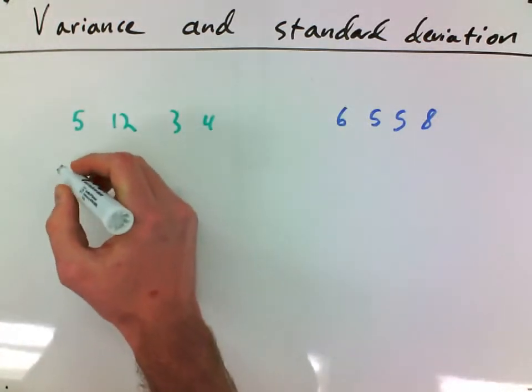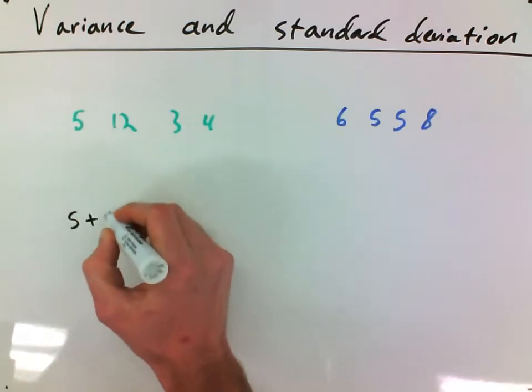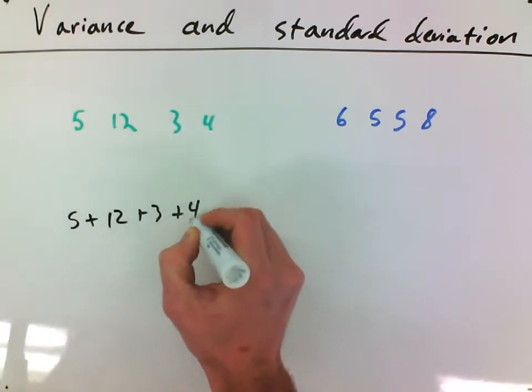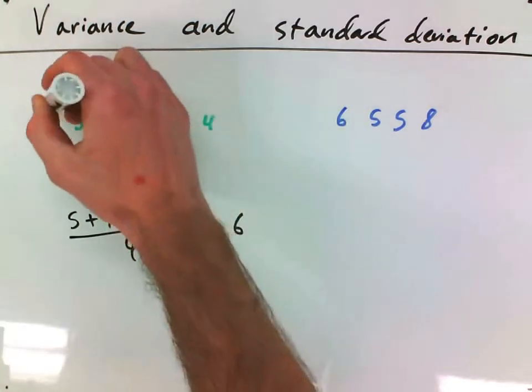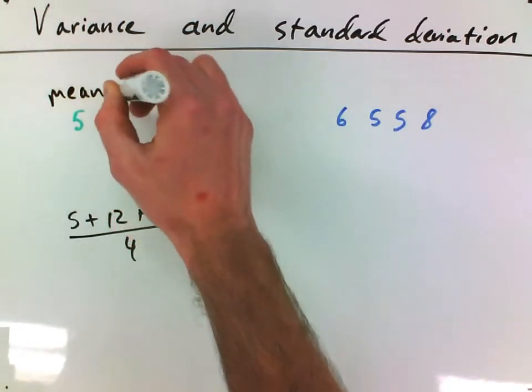So if I try to calculate the mean for both of these, this one would be 5 plus 12 plus 3 plus 4, and I'm going to divide that by 4. I'll figure out this side has a mean of 6.